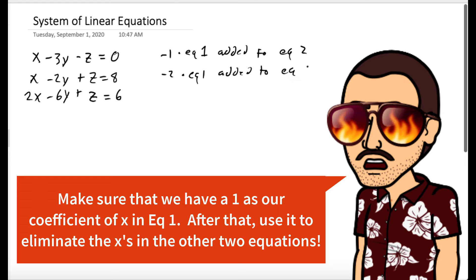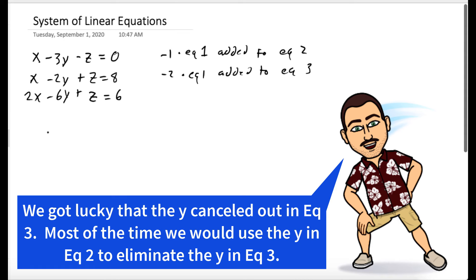And similarly, negative 2 times equation 1 added to equation 3. That will eliminate the 2x in equation 3.